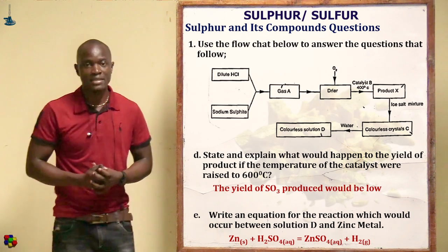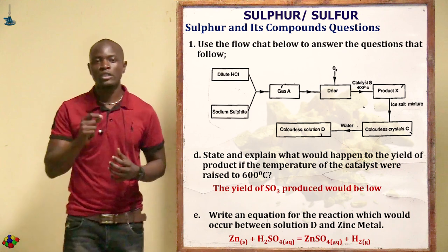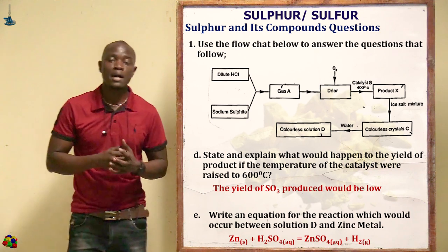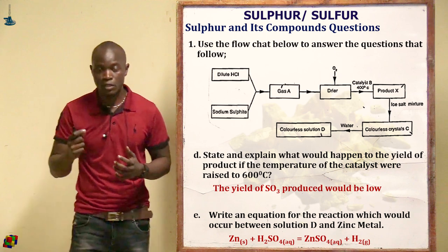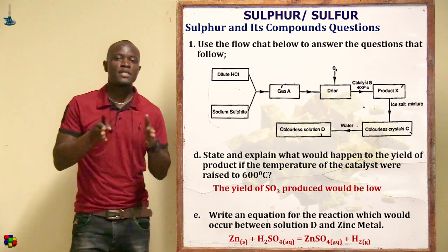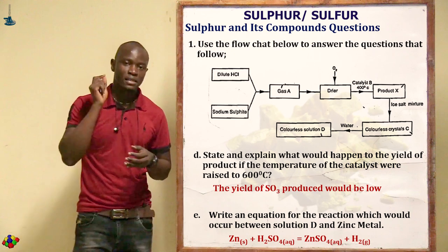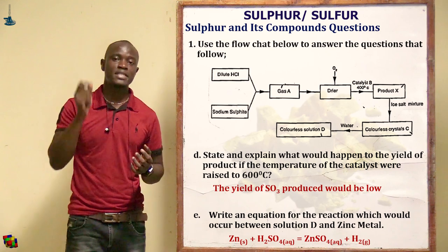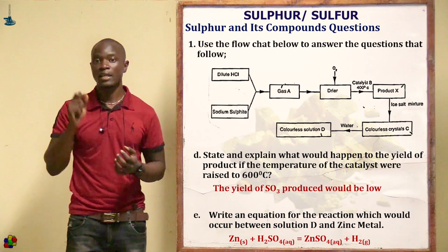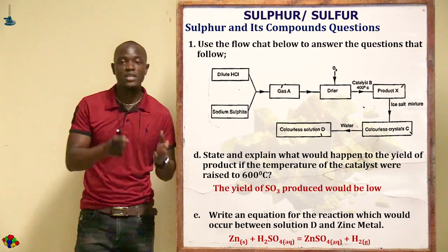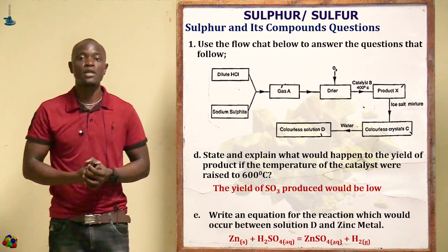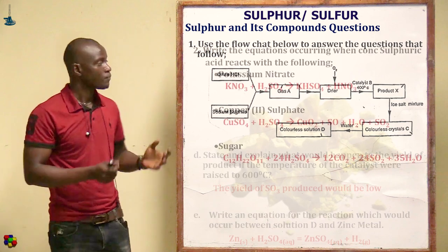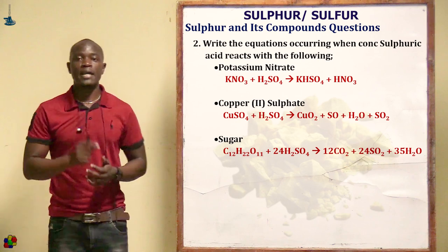The next question asks for the equation for the reaction between solution D and zinc metal. Solution D is sulfuric acid, so we react sulfuric acid with zinc metal. The products are zinc sulfate (a salt) plus hydrogen gas. This is a reaction between an acid and a metal.